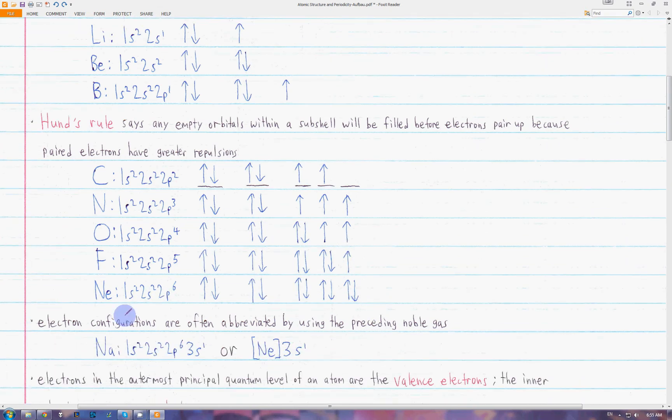We often use electron configurations of the noble gases as abbreviations for higher elements. For example, sodium is the one after neon. After the filled p orbital, the last electron goes to the 3s subshell. So instead of writing all this, we can write the neon in brackets, which stands for all of this, the electron configuration of neon, and then just add 3s1 to the end.